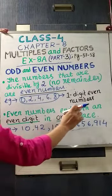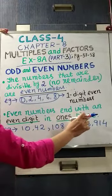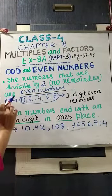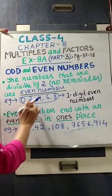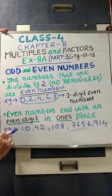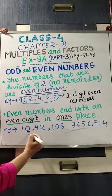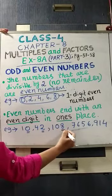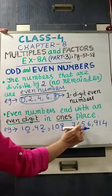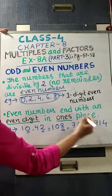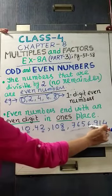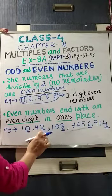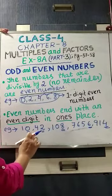Even numbers end with an even digit in one's place. One's place means the last digit. So in an even number, if it is more than one digit, the last digit will be either 0 or 2 or 4 or 6 or 8. For example, I have written 10 — one's place is 0. Then 42 — one's place is 2, an even digit. Then 108 — one's place is 8, also an even digit. 7,656 — last digit, one's place, is 6, also an even digit. 914 — last digit, one's place, is 4, also an even digit. So the numbers that have even digits at one's place are called even numbers.